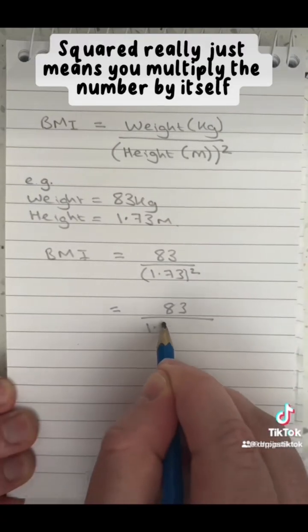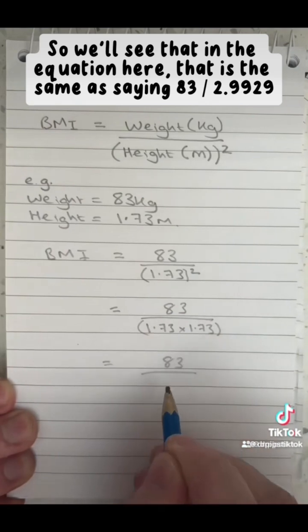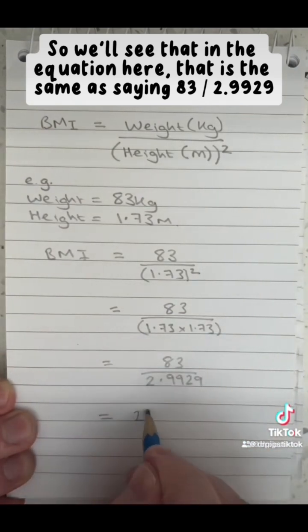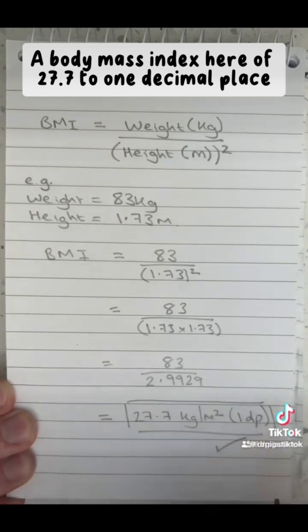Squared really just means you multiply the number by itself, so we'll see that in the equation here. That is the same as saying 83 divided by 2.9929, giving a body mass index of 27.7 to one decimal place.